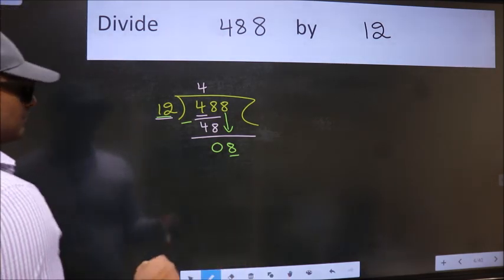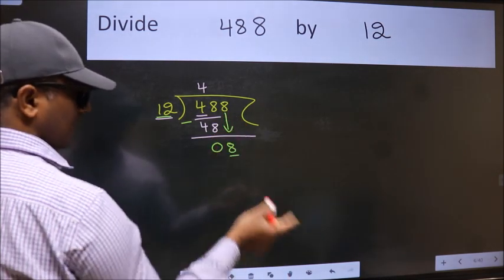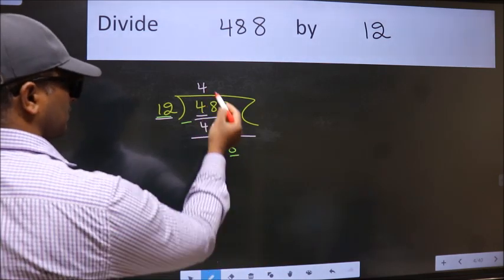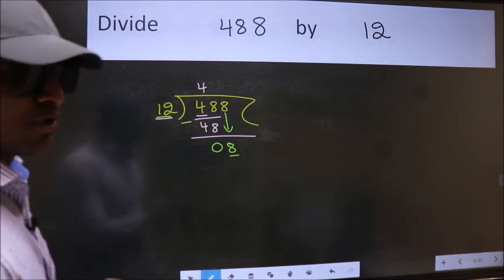Why is it wrong? Because just now you brought this number down, and in the same step you want to put dot, take 0, which is wrong.